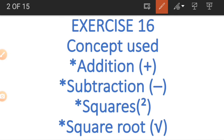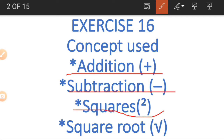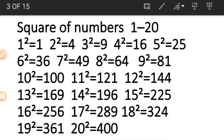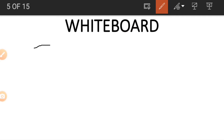In the first example of Exercise 16 we are going to be looking at the concepts of addition, subtraction, squares of numbers — which I'm going to emphasize — and square root, which is the opposite of squaring numbers. Let's look at this table: it's a table of squares of numbers from 1 to 20, and we need to learn these because it will help us understand this exercise better.